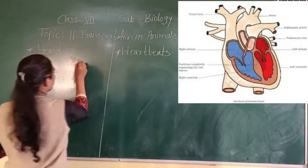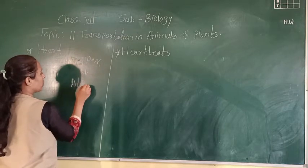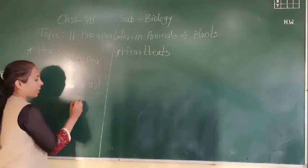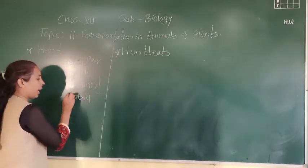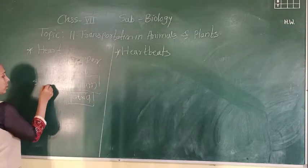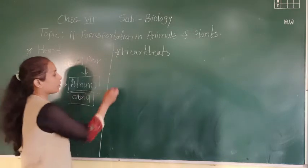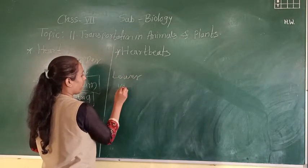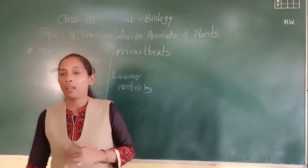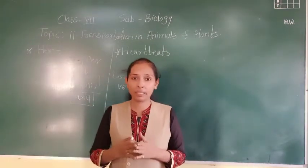The upper chambers of the heart are called atria (singular: atrium), and the two lower chambers are called ventricles. With the help of these two atria and two ventricles, the mixing of the two types of blood is avoided.